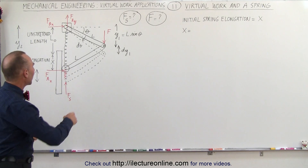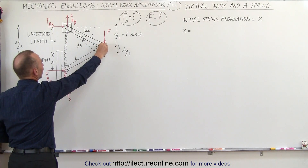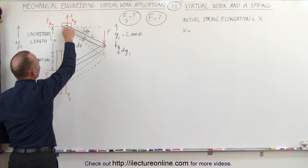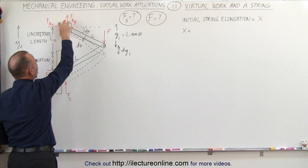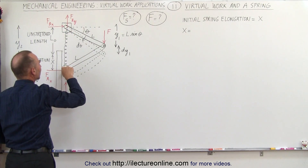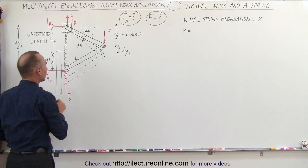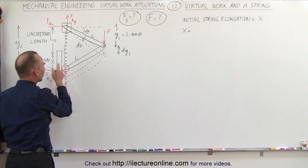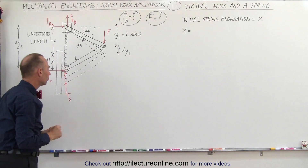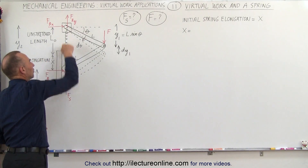What we have here is two beams attached together. One end is attached to a fixed component — it can't move, it can only swivel. The other end is attached to a wheel that can roll up and down against this wall. We'll assume that there's no friction. We have a spring connected between these two beams.